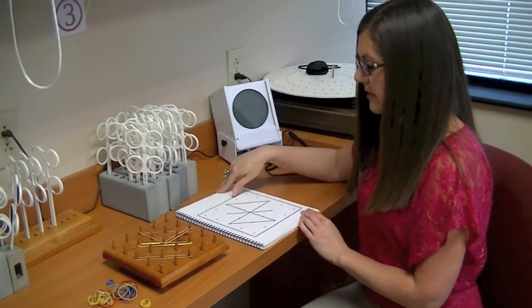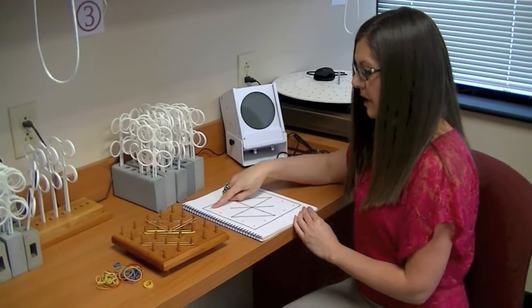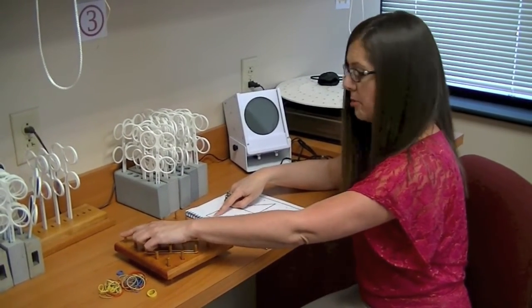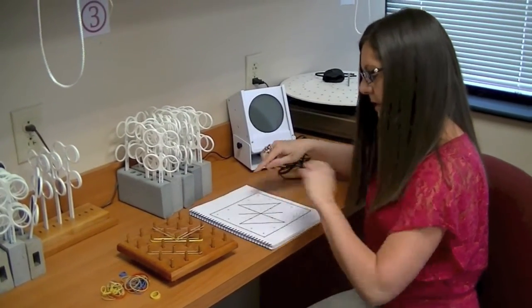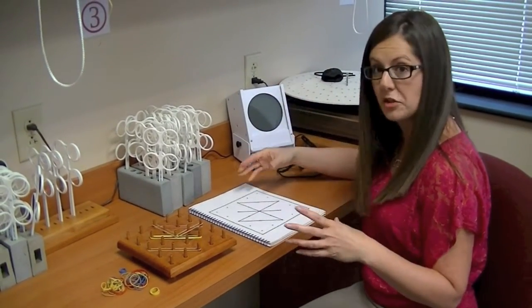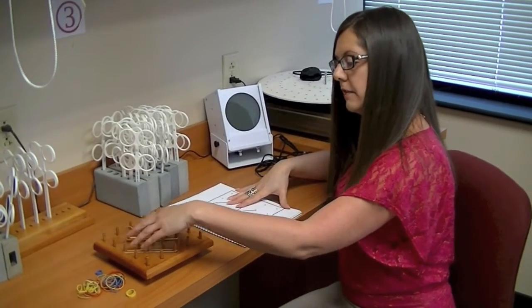It also allows them to learn how to copy in space correctly, because they have to understand that this little dot here corresponds to this peg on the board, and so on and so forth. They have to have an overall global and what we call spatial view of what they see here, and then be able to translate it over to this.